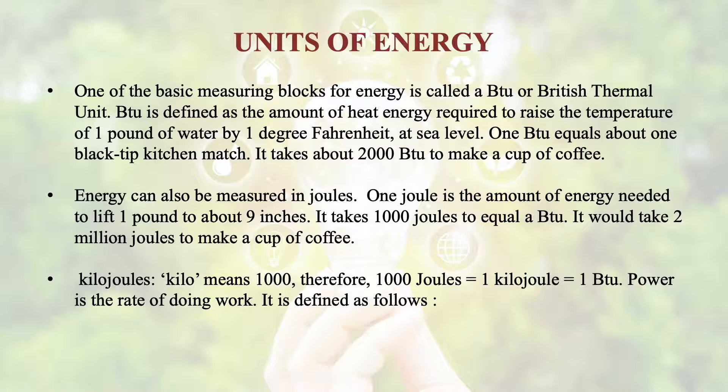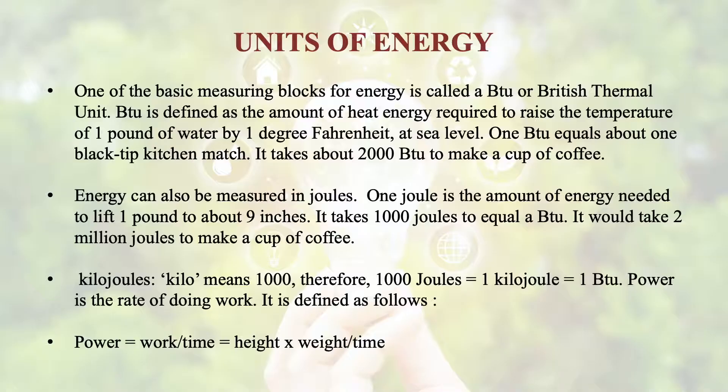Kilo Joule means 1000 Joules, and 1 Kilo Joule is equivalent to approximately 1 Btu. Now what is power? It is the rate of doing work. That means work done within a given time is known as power. Power is equal to work divided by time. Work is defined as force into displacement, so force into displacement divided by time is known as power. If we are raising something to a height, then it is height into weight divided by time. Everywhere we are consuming energy and the unit in which we measure this energy is Kilo Joule. We also measure it in terms of Kilo Calorie as well.